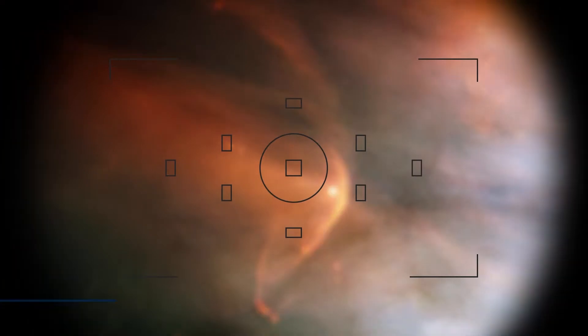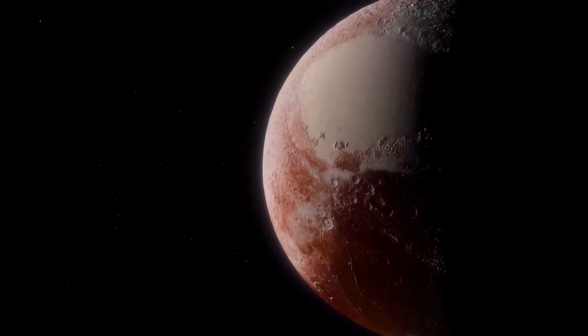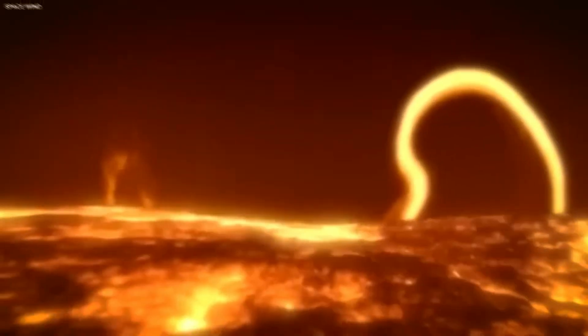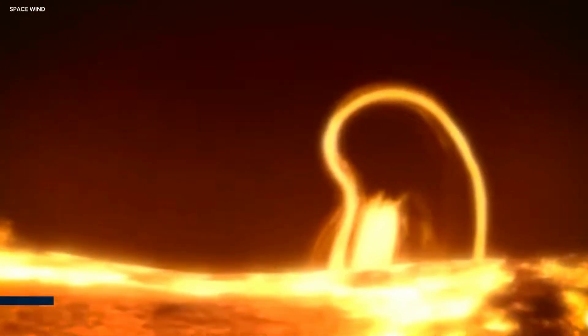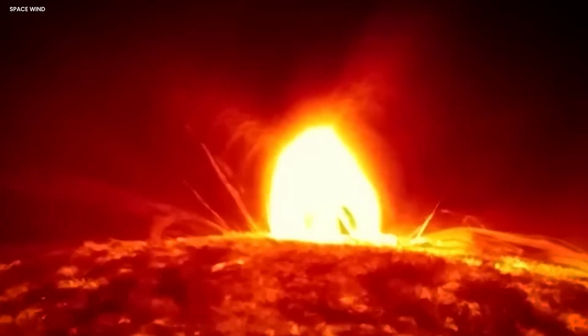The heliosphere extends a staggering 11 billion miles into space, surpassing Pluto's orbit by over twice the distance. Solar wind originated from the sun's outermost atmosphere, known as the corona. This region emits a flow of protons and electrons.